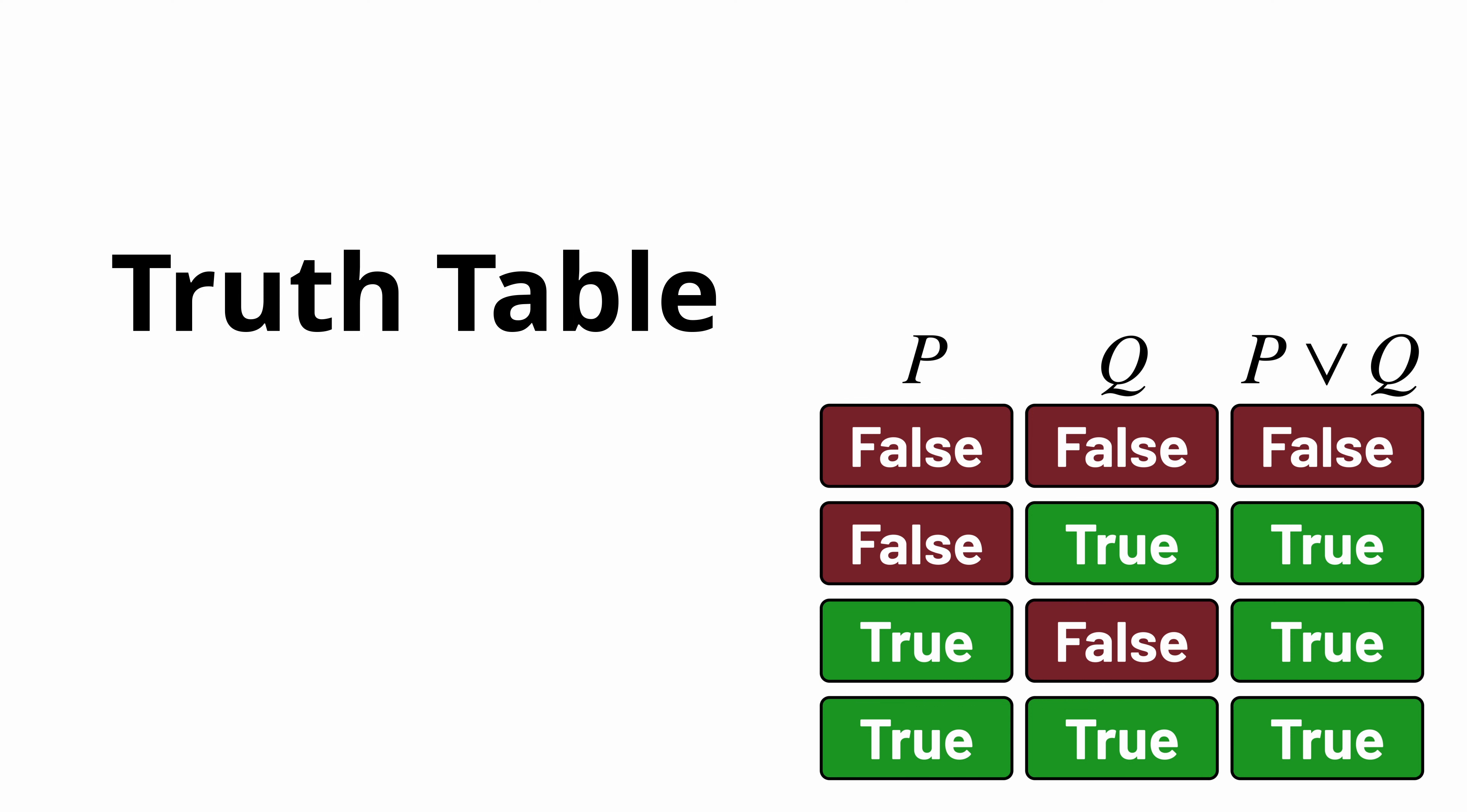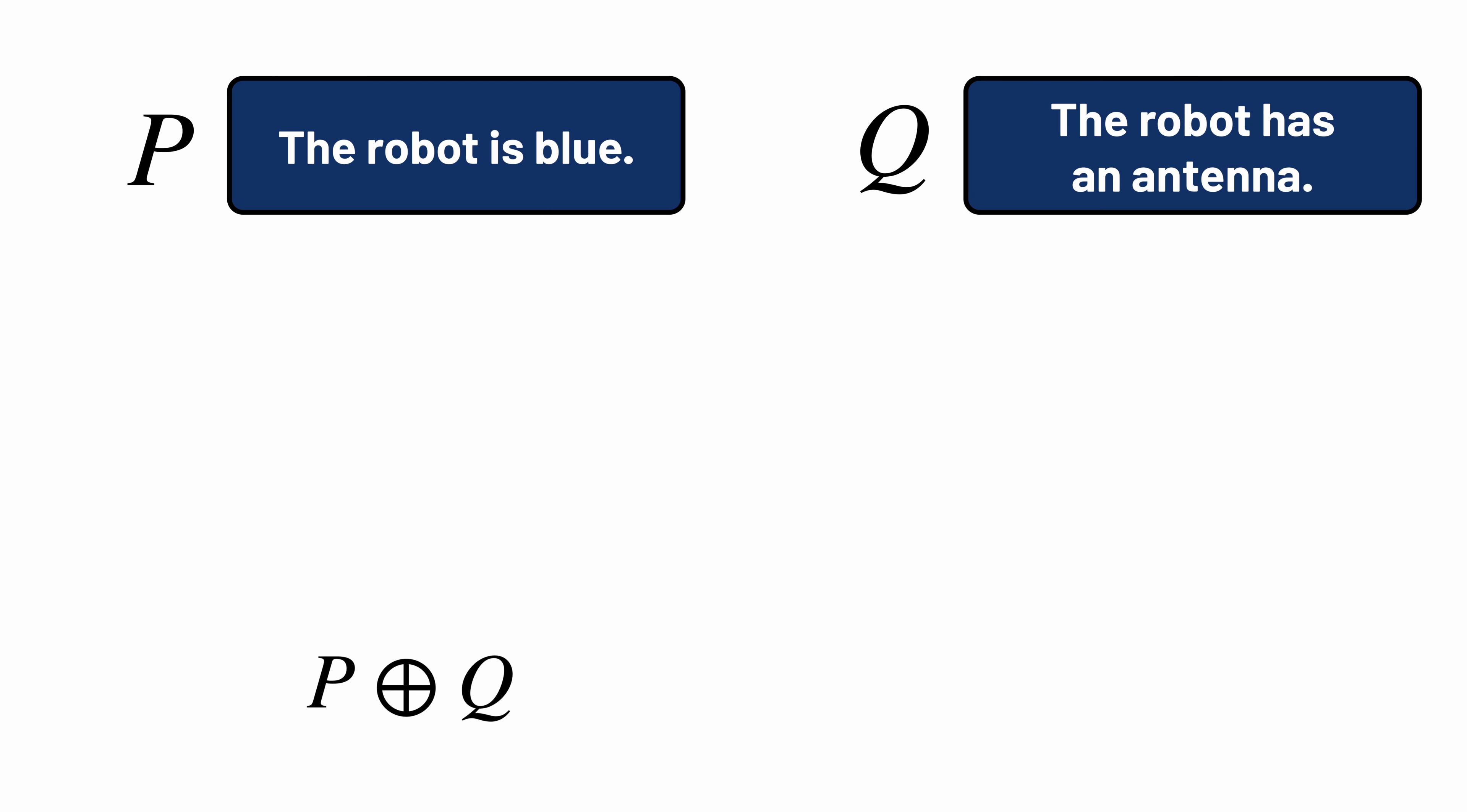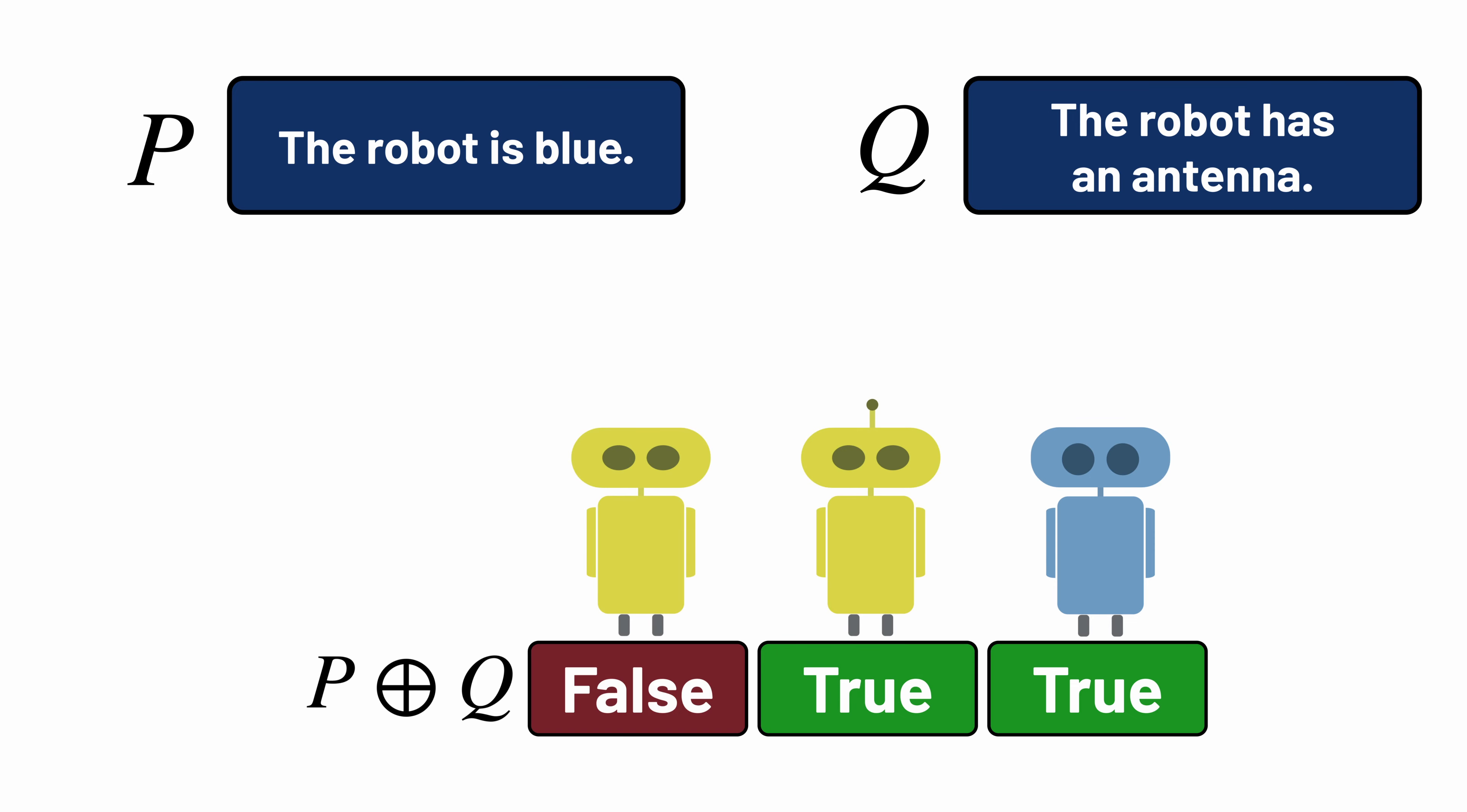Sometimes though, we'll want to express the idea that P is true, or Q is true, but not both. For that, we can use this symbol, called EXCLUSIVE OR. In this case, P EXCLUSIVE OR Q is true when the robot is blue, it's true when the robot has an antenna, it's false when the robot is not blue and doesn't have an antenna, and it's also false when the robot is both blue and has an antenna.